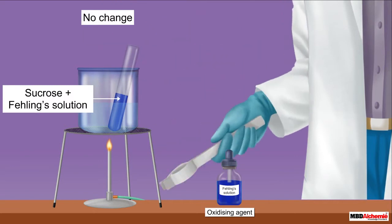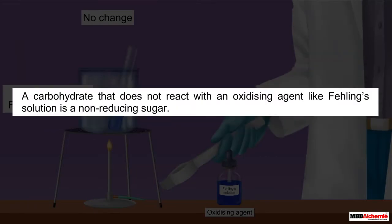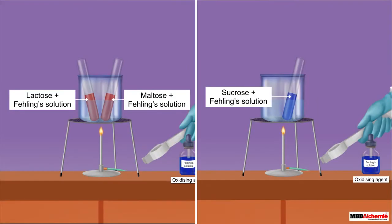Such a carbohydrate that does not react with an oxidizing agent like Fehling's solution is a non-reducing sugar. Let us now see what makes a carbohydrate reducing or non-reducing.